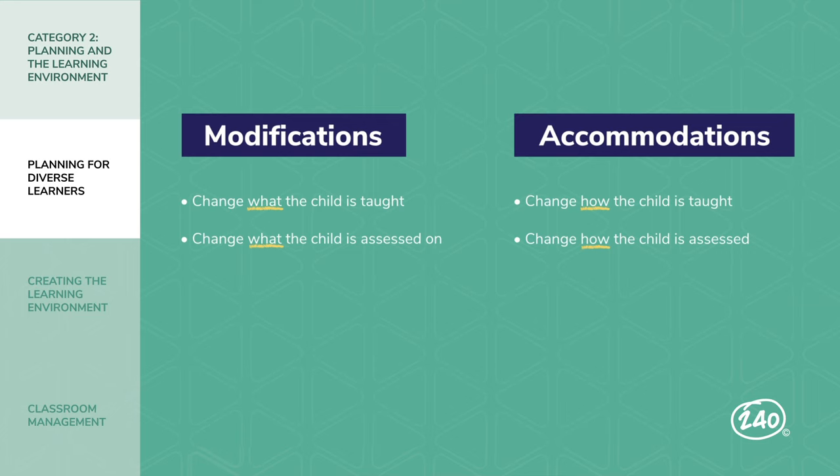For example, for a middle school student with an intellectual disability, it would be appropriate to modify the number of body systems they'll learn from 13 to 5. But a middle school student with dyslexia is fully capable of learning all 13 body systems — their teacher may instead use an accommodation of fewer questions on a page. A student may need modifications, accommodations, or both. That's what the IEP is for.